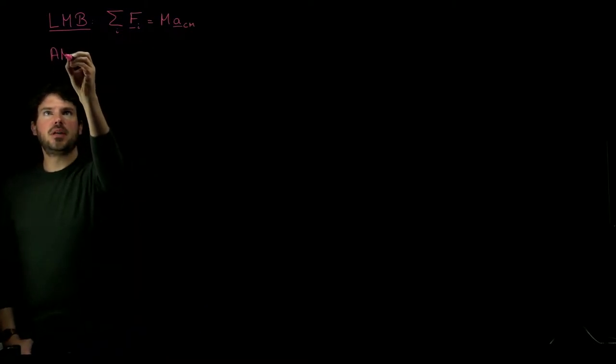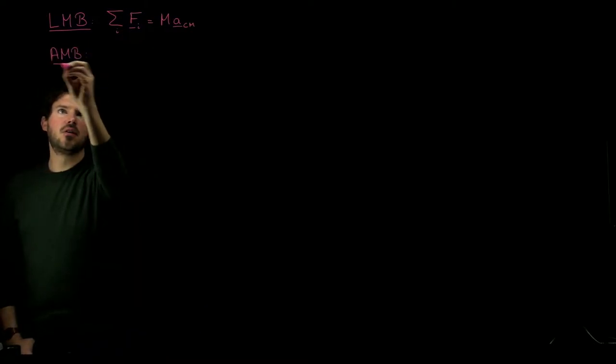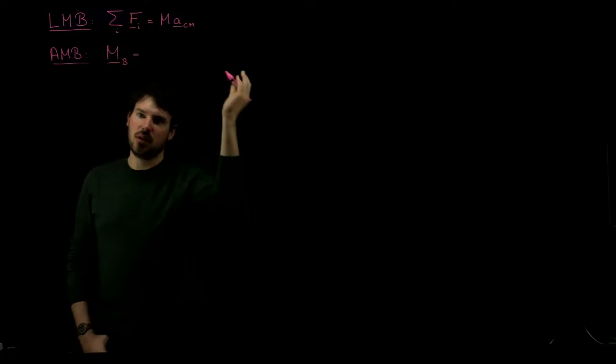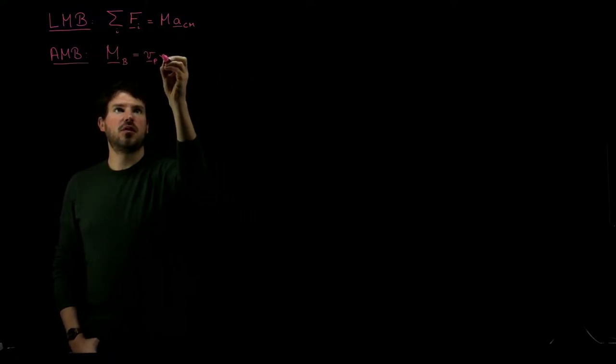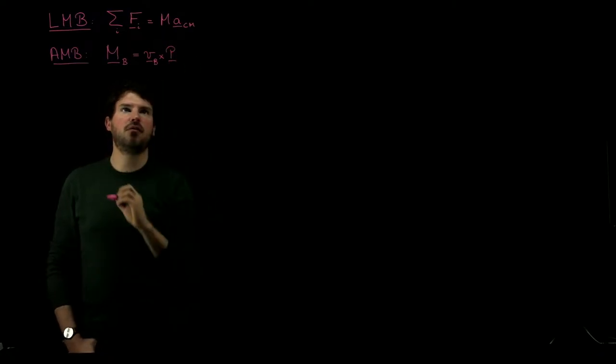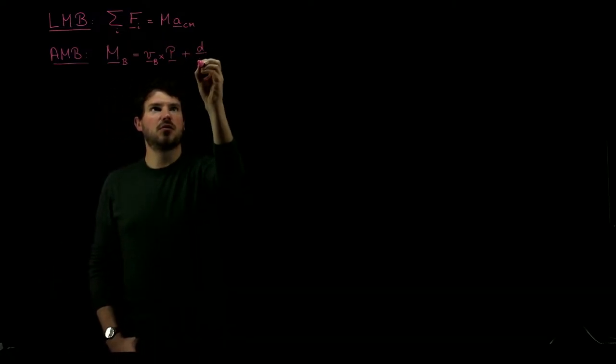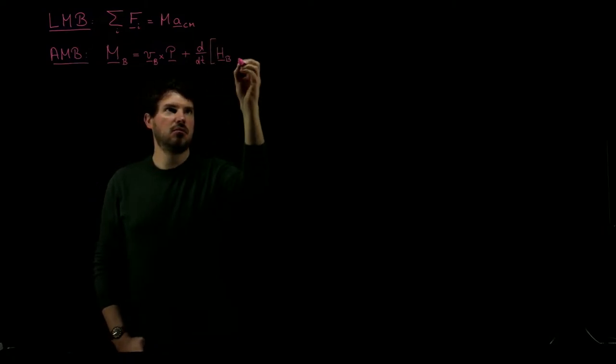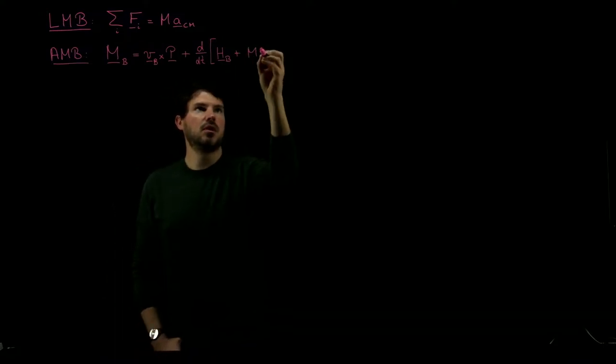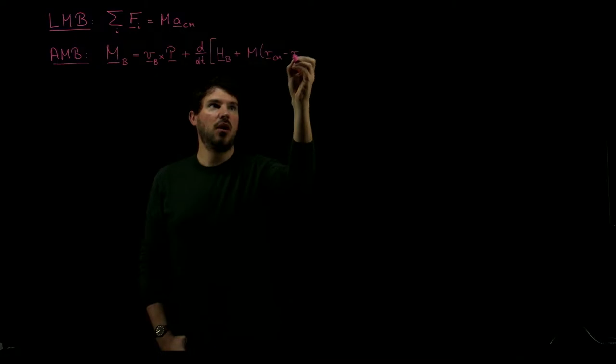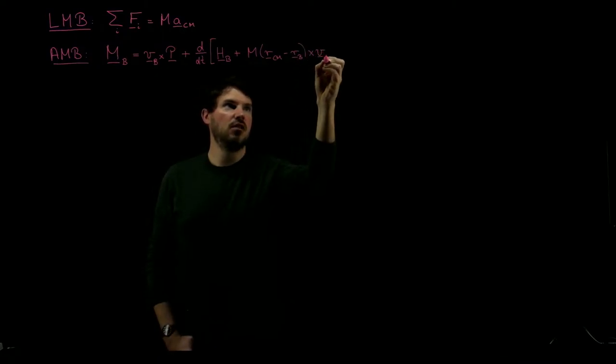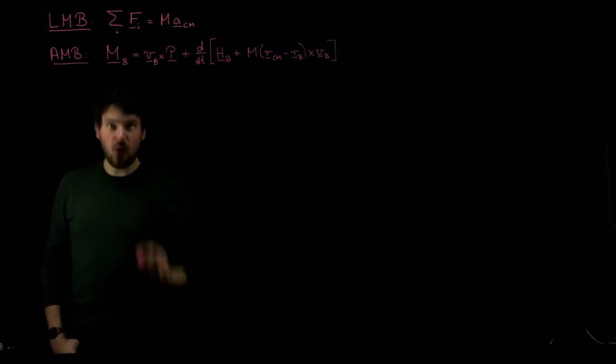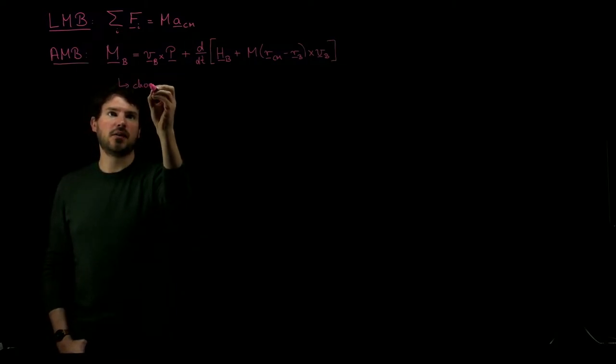The next thing we introduced was AMB, and here we showed that the net torque with respect to point B was given by this whole thing: velocity of point B cross the linear momentum of the rigid body, plus the time derivative of HB, plus M times RCM minus RB cross VB. This was the most general form.